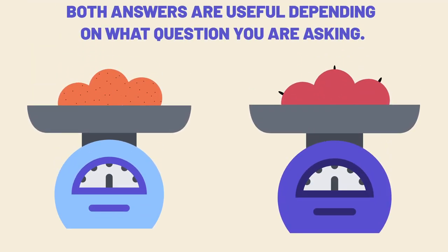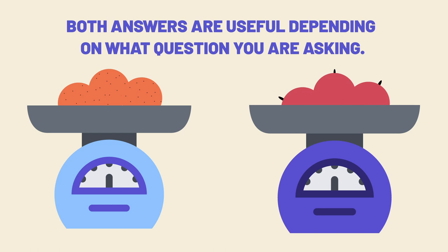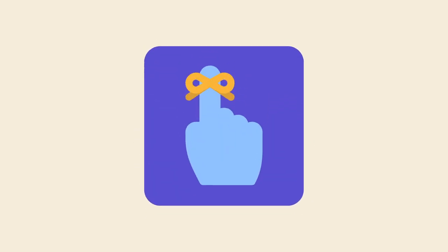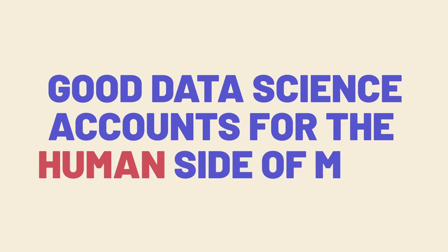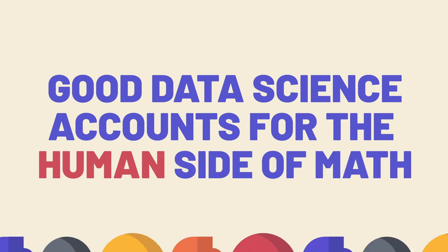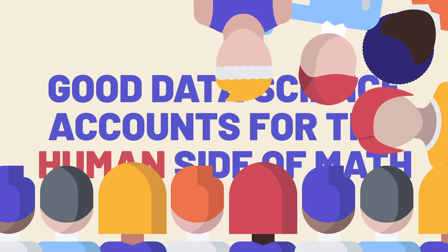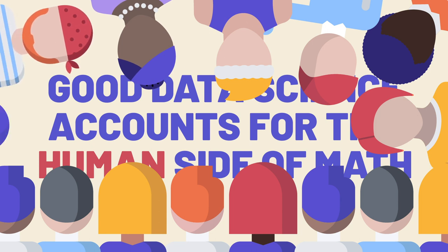It is important to understand that both of these answers are correct. Both 10 and 12 are meaningful but different averages for measuring this situation. Both have their uses depending on what questions you're asking. This isn't some neat trick. It's a reminder to always approach data science with an awareness of your preconceived notions and assumed perspectives. Good data science relies on the ability to identify and account for the human side of math. Otherwise, our algorithms and equations will masquerade as objective when they are in fact expressions of the humans who made them.